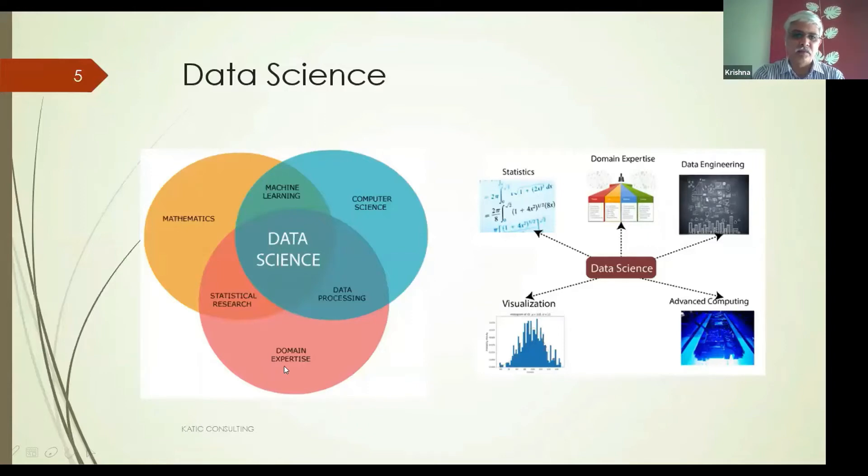The first one is domain expertise, or the domain or business knowledge. Domain would actually mean, let's say I come from a banking background, so banking is a domain. Or it could be healthcare, or it could be automobile—any of these industries. There is a need to understand a particular domain.